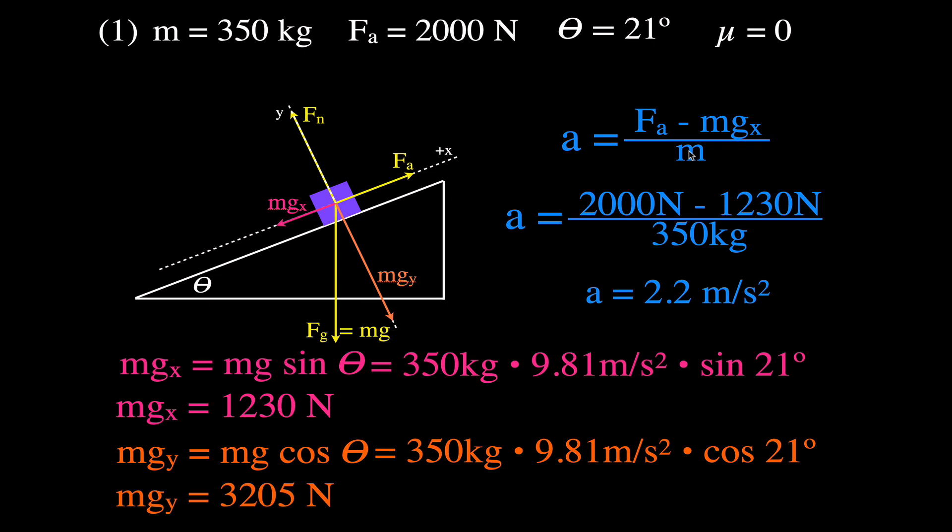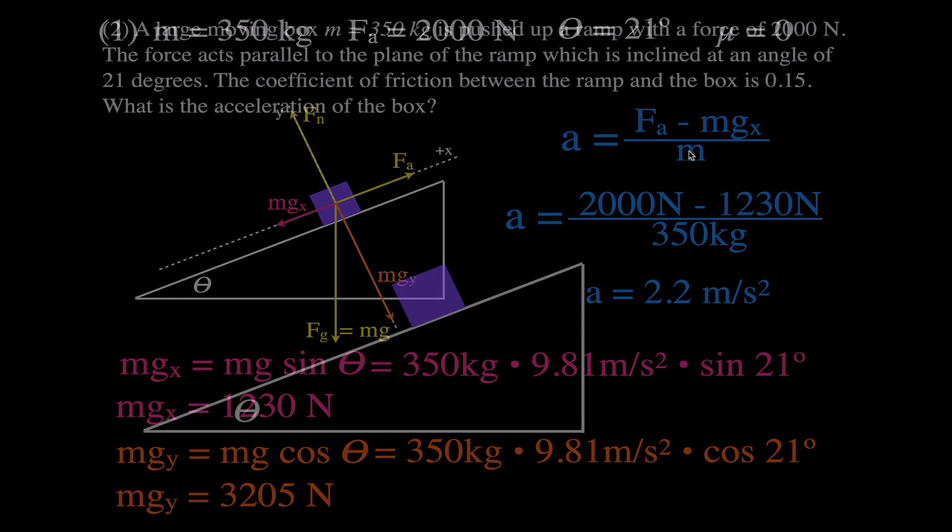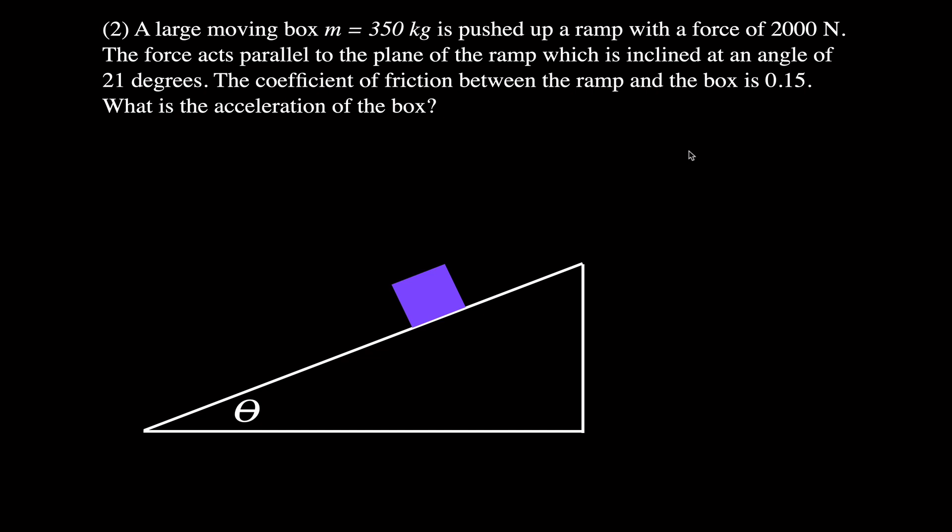That was our problem for no friction. Now we're going to do basically the same problem but introduce friction. We have the same large box of 350 kilograms, applied force of 2,000 newtons, 21 degrees, but in this case the coefficient of friction between the ramp and the box is 0.15. Remember the coefficient of friction has no units. We want to find the acceleration, and this time we have friction. We just need to get the friction force into the equation.